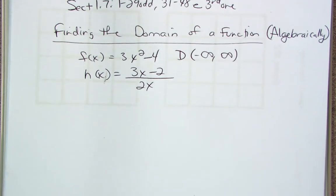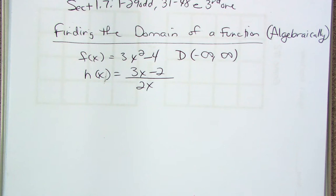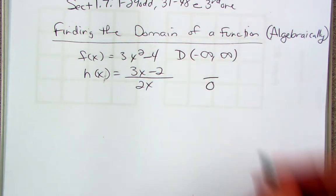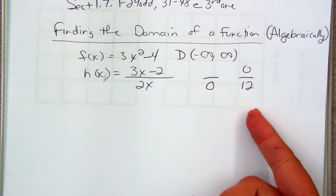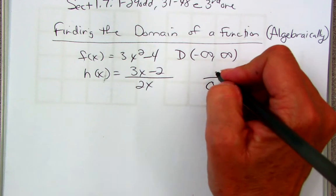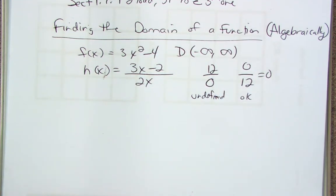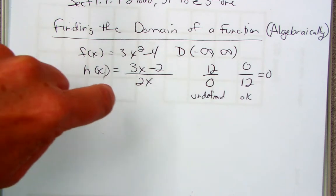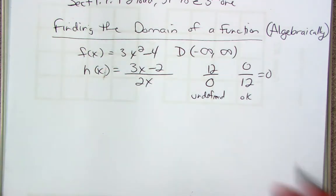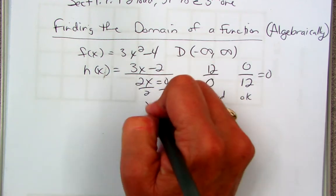Now I have some kind of rational function. Can I put in a 1? Yeah. Can I put in a 0? No — why? Because I can't have a fraction with a 0 in the denominator — that's undefined. I can have 0 in the numerator, that just equals 0, that's okay. But I can't have 0 in the denominator. So when there's a fraction or rational function, I only focus on the denominator. I set the denominator equal to 0 to see what x makes it undefined.